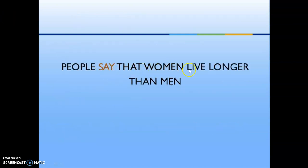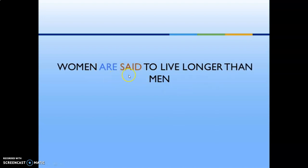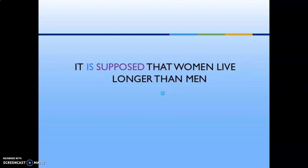Final examples: 'People say that women live longer than men.' → 'It is said that women live longer than men.' → 'Women are said to live longer than men.' → 'Women are supposed to live longer than men.' → 'It is supposed that women live longer than men.' These examples show how to change sentences to passive voice and apply the forms, rules, and reporting expressions.